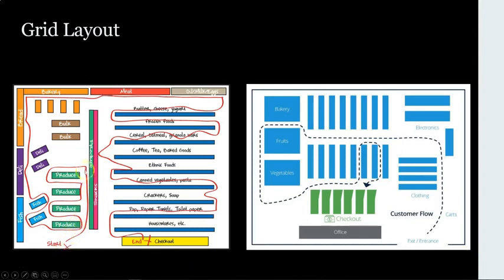Looking at the example again, we can follow an individual shopping through the store. In the consumer packaged goods aisles, we can see this customer has gone up and down a few aisles, reached the end of the cereal, oatmeal, and granola bars aisle, hit the snacks, never getting close to the coffee and tea. They went partially down the ethnic foods aisle and turned around, made it down the canned vegetables and pasta aisle, skipped housewares altogether, and checked out. Customers are not going down every single aisle, so they're not seeing merchandise that wasn't on their list.